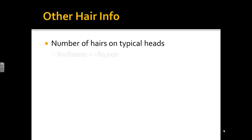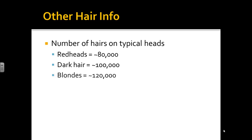Here's some fun random info — the number of hairs on typical heads. Redheads have the least, with about 80,000 hairs. Dark-haired people have about 100,000, and blondes have about 120,000. We'll do a bunch of labs in class. Thanks for watching and make sure you keep up with all of this.